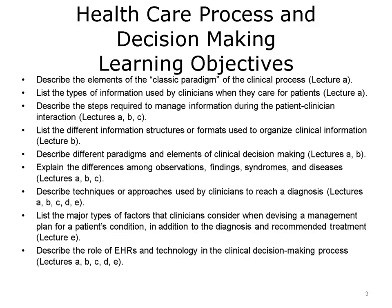The objectives for Healthcare Processes and Decision-Making are: to describe the elements of the classic paradigm of the clinical process; list the types of information used by clinicians when they care for patients; describe the steps required to manage information during the patient-clinician interaction; list the different information structures or formats used to organize clinical information; describe different paradigms and elements of clinical decision-making; explain the differences among observations, findings, syndromes, and diseases; describe techniques or approaches used by clinicians to reach a diagnosis; list the major types of factors that clinicians consider when devising a management plan in addition to the diagnosis and recommended treatment; and describe the role of EHRs and technology in the clinical decision-making process.